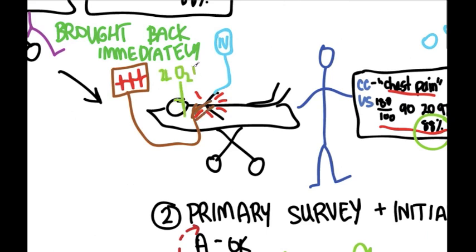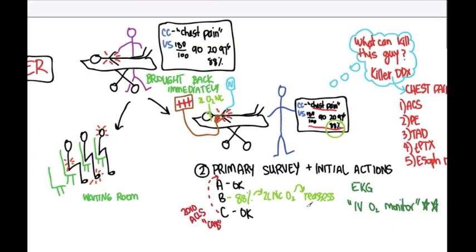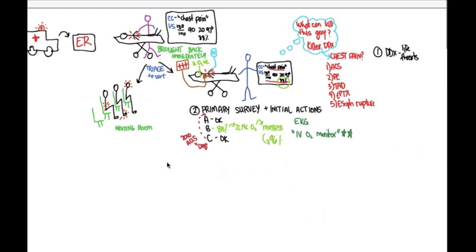So again, IV, O2, monitor. Let's say at this point we reassessed and my pulse ox is now 96% on two liters. So at this point, we've covered the first two steps of your evaluation of the emergency department patient. And that is to first form a differential diagnosis that includes all the life threats. And really, that should be done before you see the patient. But don't worry, we're going to refine this as we get more information. And then the second step is to do your primary survey and initial actions. That is, if there's something going to kill your patient, you better fix that now. In the next video, we'll look at history and the secondary survey.